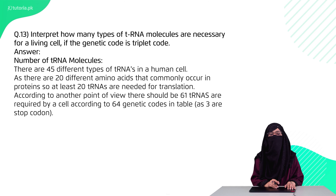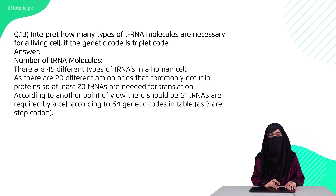Question 13 is: how many types of transfer RNA molecules are necessary for living cells if the genetic code is a triplet code? There are mostly 45 different types of transfer RNA required, of which 20 are needed for translation, because we have a total of 64 genetic codes.